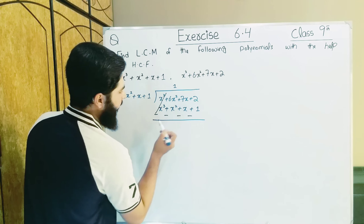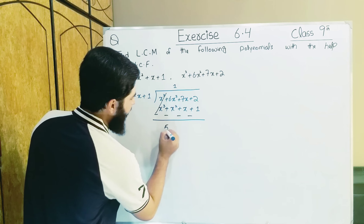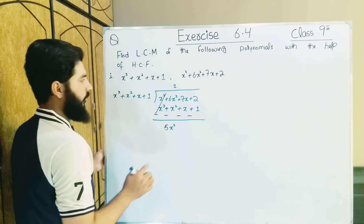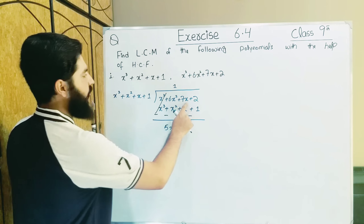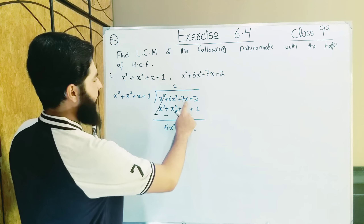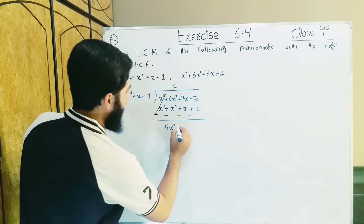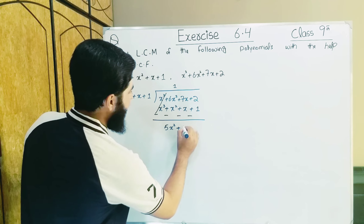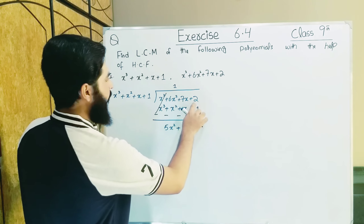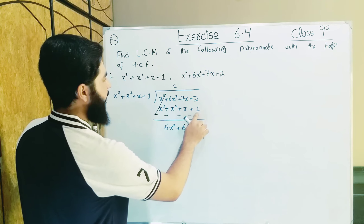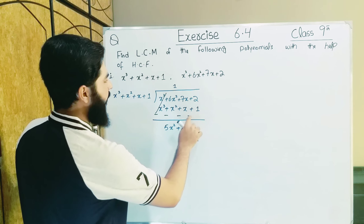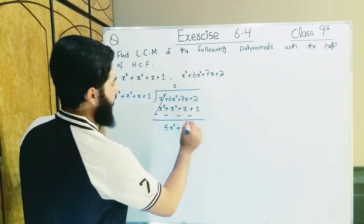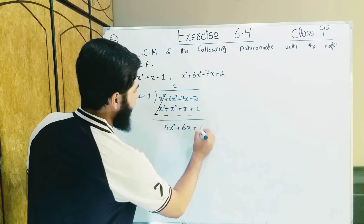6x² and 1x² cancel. What did we get? We have 5x². Then 7x² and 1x² cancel — what did we get? We have only 6x. Then 2x and 1 cancel — why did we get 1? 2x minus gave us 1.